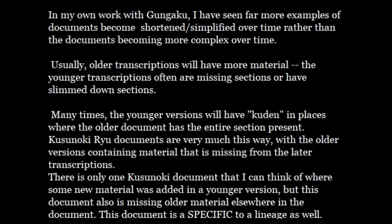These are examples where you can see that simpler does not automatically mean it is the older one. In my own work with Gungaku, I have seen far more examples of documents that become shortened or simplified over time, rather than documents becoming more complex. The usual pattern — the vast majority of Gungaku texts that I have read, studied, worked on, and analyzed — start off complex and become shortened and simplified over time. The older transcriptions usually have more material, and the younger transcriptions are often missing sections entirely, or have sections slimmed down. Many times, the younger versions will even just say 'kudin' in places where the older document has an entire section.